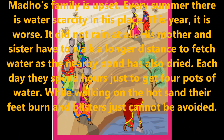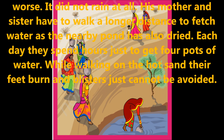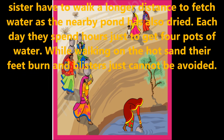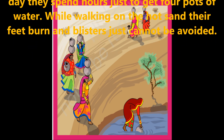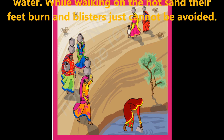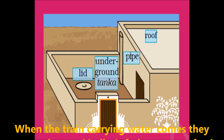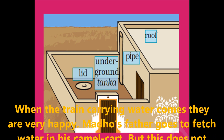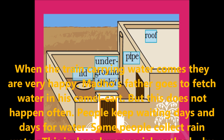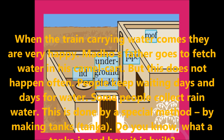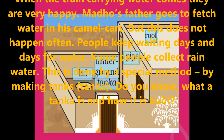His mother and sister have to walk a long distance to fetch water from a nearby pond, and they get very tired. Each day they spend hours just to get four pots of water. While walking on the hot sand, their feet burn and blisters cannot be avoided. Once a month when the train carrying water arrives, they are very happy. Madhu's father goes to fetch water in his camel cart, but this does not happen often. People keep waiting days and days for water.